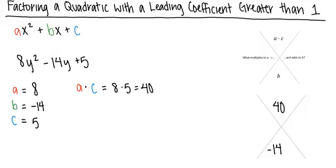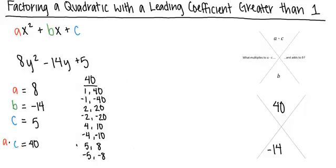Our next step is to make a list of pairs of factors of 40. From these factors of 40, we have to decide which ones add up to our b value, negative 14. We can see that the factors of ac that add up to negative 14 are negative 4 and negative 10, so we can input these numbers into our chart.